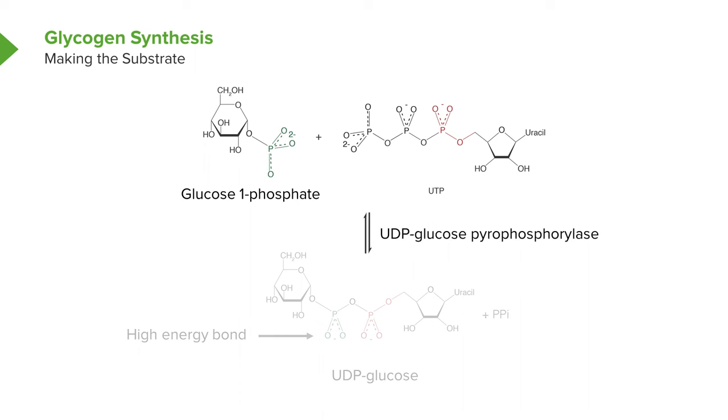And what happens in this reaction is that a pyrophosphate, the PPI that you can see in the lower part of the figure, on the lower right, is released. And the remaining part, the UDP, is attached to the glucose molecule.